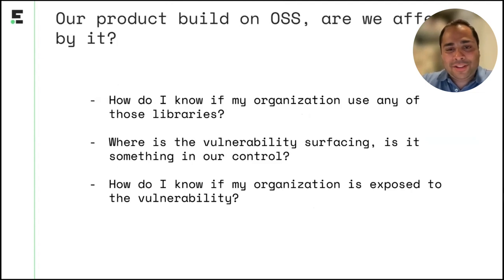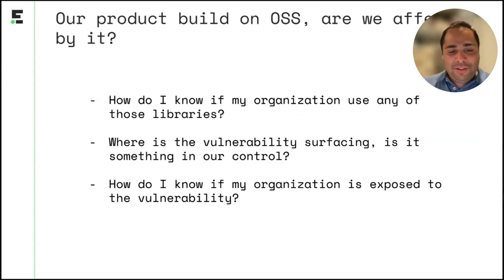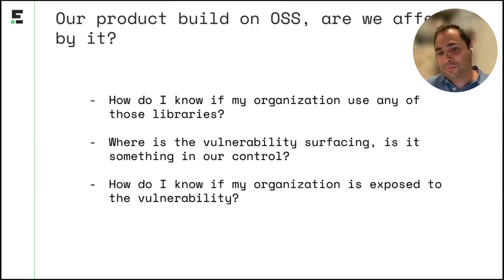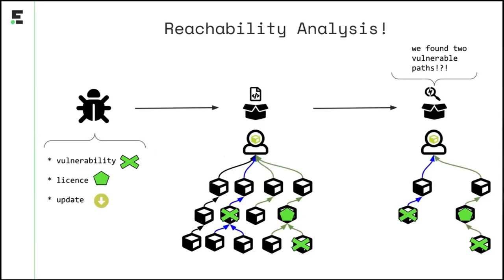We're building our products on open source — so how do we know that we are affected by any of those incidents we learn about by reading the news? One of the main questions is: how do you know if your organization uses any of those libraries that are mentioned? And then there's the other aspect: where is the vulnerability surfacing? Is it in the direct dependencies or somewhere deep down in the transitive dependency tree? The most important question is: since we're using so many dependencies, is every single incident something that actually affects me? Am I really exposed to the vulnerability being discussed? This is where reachability analysis comes into play.